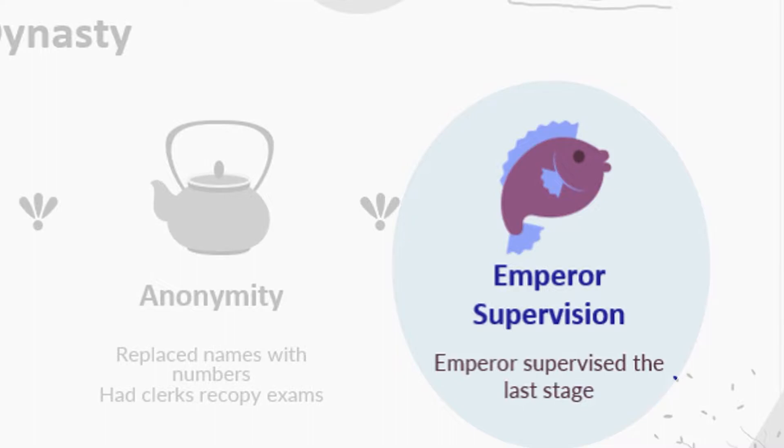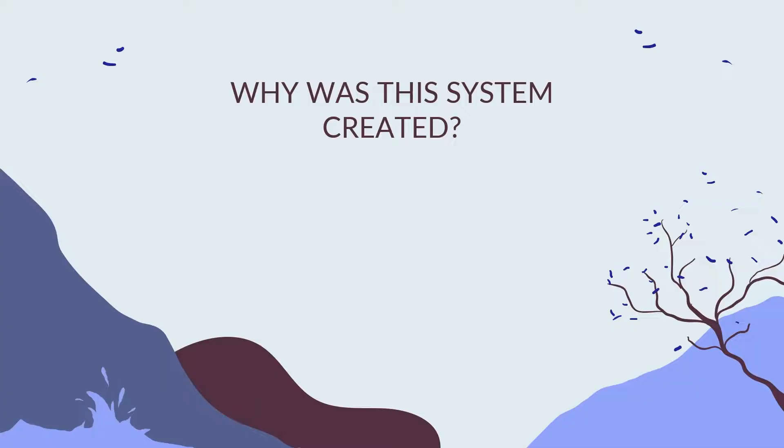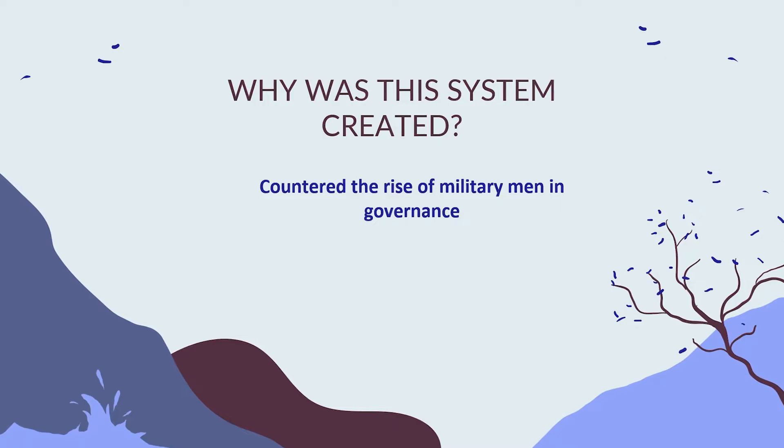So why was this system created? Essentially, it started to counter the rise of military men in governance and made sure that it wasn't just the rich and militarily powerful dominating the land. This also meant that people could start rising in class, because now anybody could have a government position. This created a new class known as the landed gentry, or the Confucian scholar.